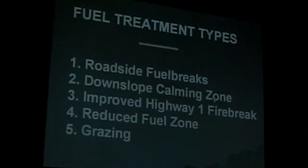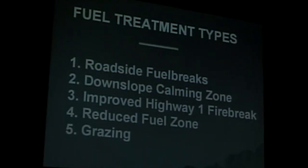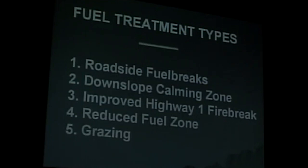There are four or five fuel treatment types in the plan. Major types are: roadside fuel breaks, addressing ingress and egress; downslope calming zones, protecting the homes most at risk on the east side of the highway; an improved Highway 1 fire break, addressing an important potential ignition source; reduced fuel zones, limiting the spread and intensity of fires on both sides of the highway; and, of course, the grazing program.